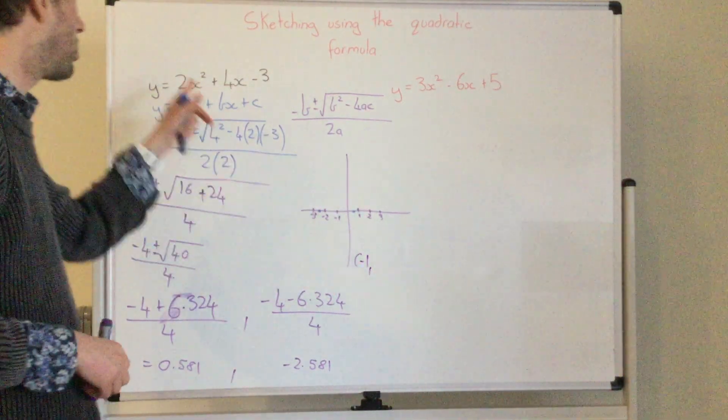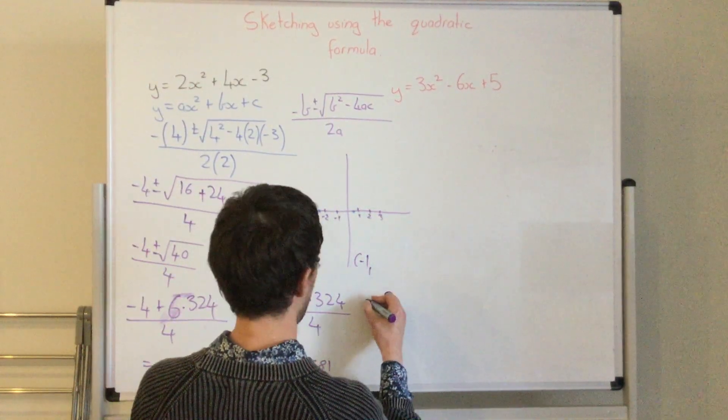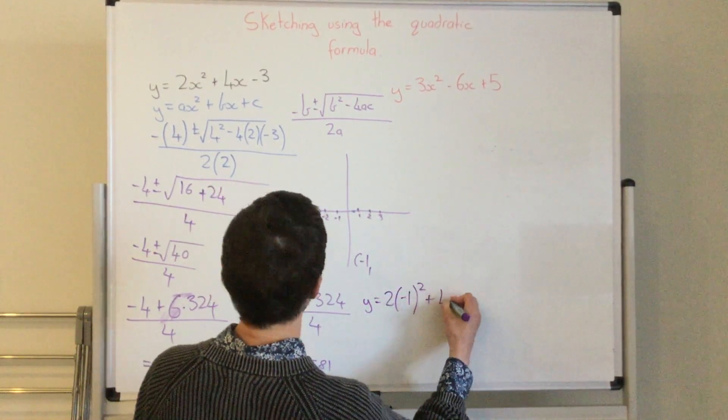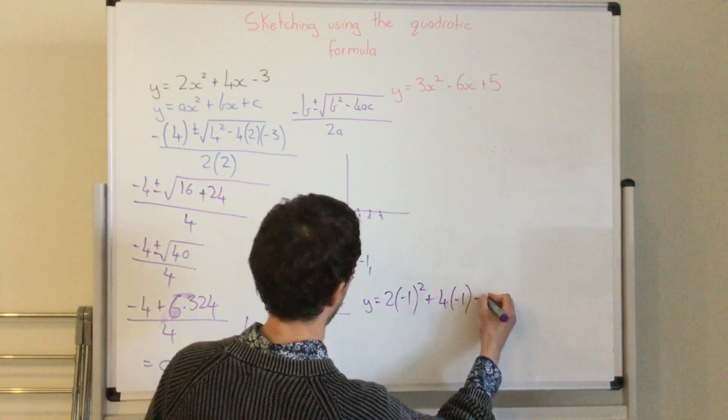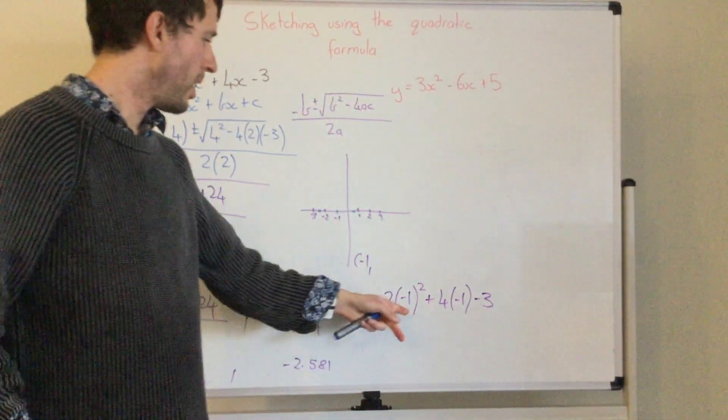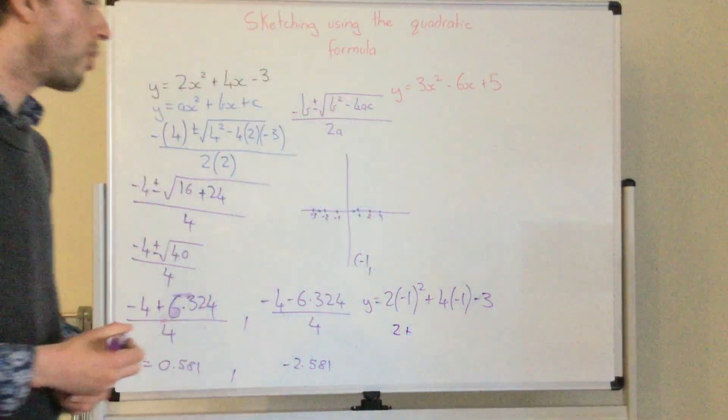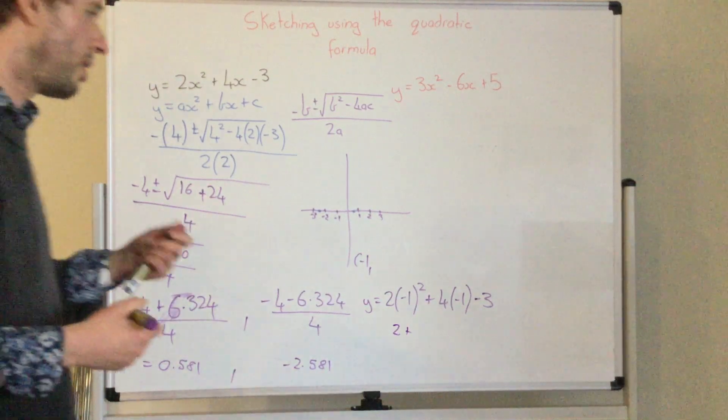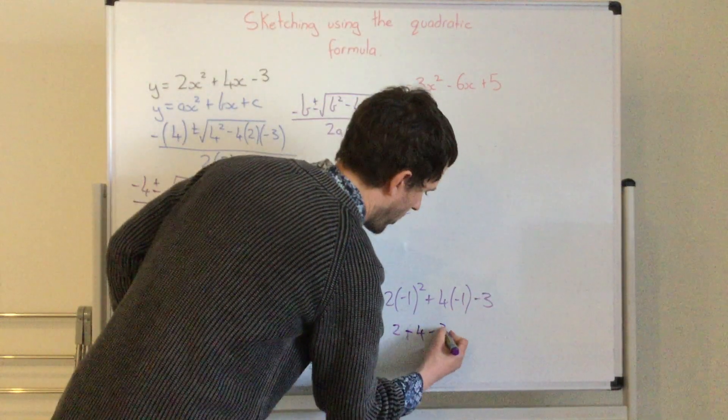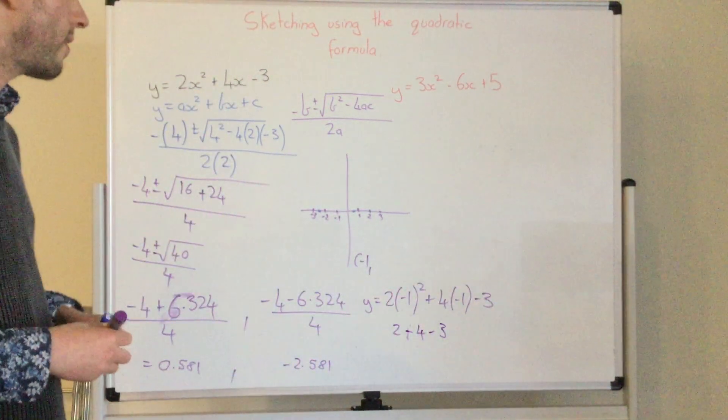When x is negative 1, I need to find now what y will be. So I just insert this into the equation. So y equals 2 times negative 1 squared plus 4 times negative 1 take 3. And I solve it. Negative 1 squared is 1, 1 times 2 equals 2. 4 times negative 1 is negative 4. So I've got 2 take 4 equals negative 2. Negative 2 take 3 equals negative 5.